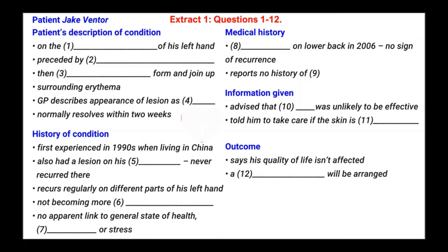Jake Ventor, please come in and take a seat. The doctor asks about a problem with his hand, and the patient says he went to see the GP a couple of weeks ago because of a sore on his left hand. He's had it for years — it appears, gets better, then comes back. He specifies that it's on the palm. At the beginning he says he has a sore on his left hand, and by the end specifies it's on the palm. So the answer to number one is palm.